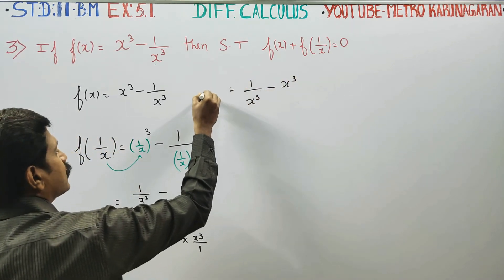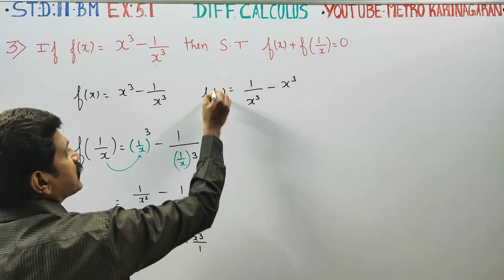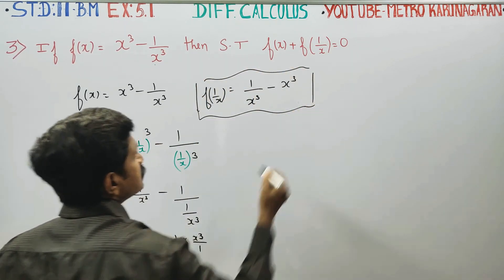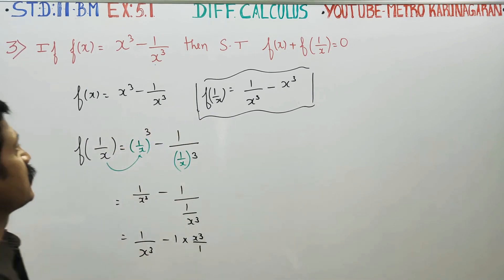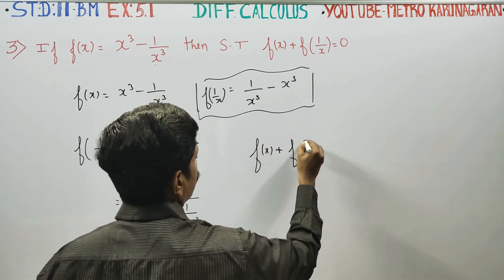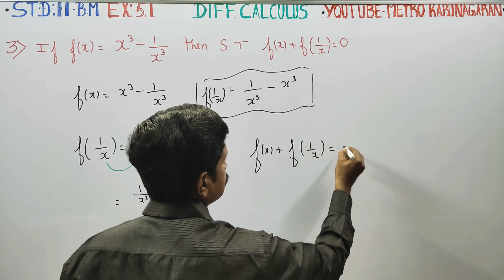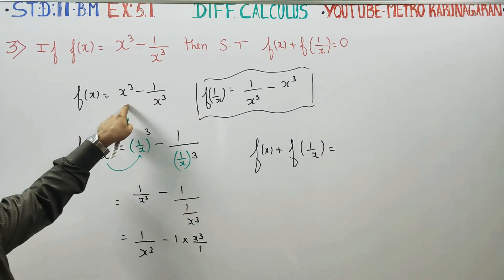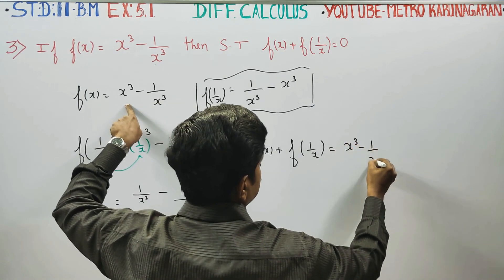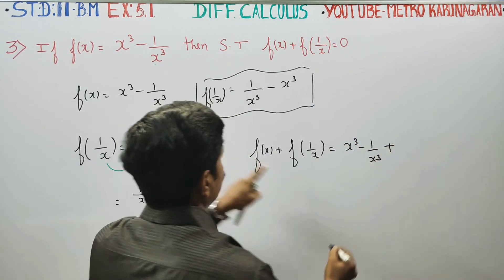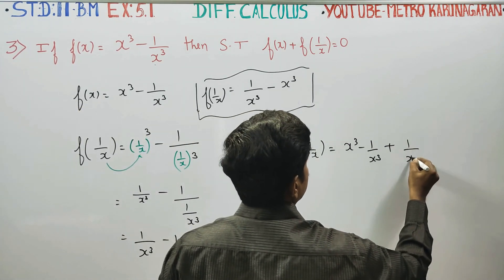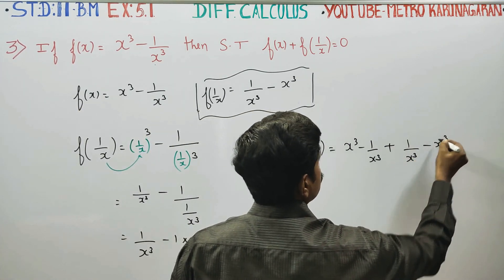This is the answer for f of 1 by x. Now we add f of x and f of 1 by x together. f of x is the original sum: x cube minus 1 by x cube, plus f of 1 by x which is 1 by x cube minus x cube.